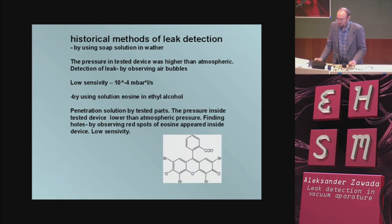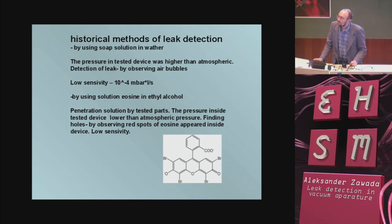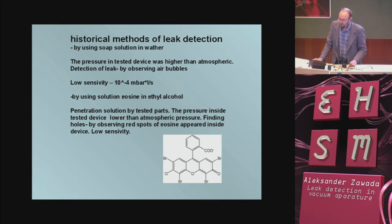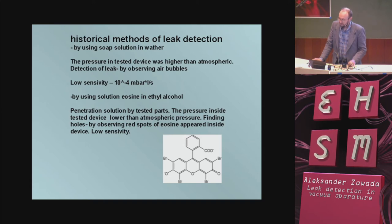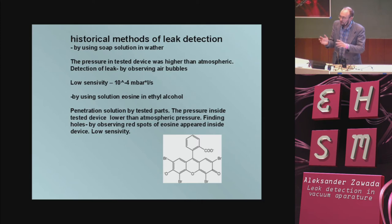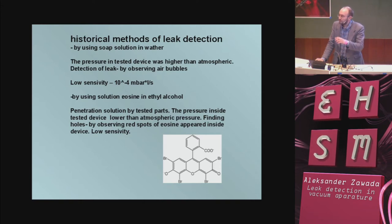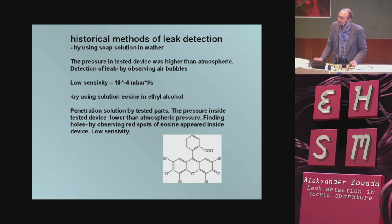Another method: we can use an eosine solution, which was very popular in the USSR. The leaking part is coated with a liquid — a solution of eosine in ethyl alcohol. During penetration of the solution into the tested part, you can observe red spots inside the apparatus. In this method, the pressure should be lower than atmospheric pressure inside the tested apparatus. The sensitivity is similar to the soap solution method.